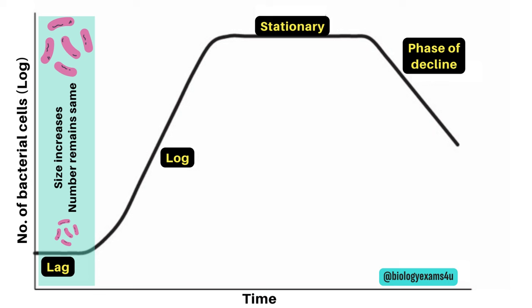The duration of lag phase varies with the species of bacteria, size of inoculum, nature of culture medium, and environmental factors such as temperature. The maximum size of the bacterial cells is obtained at the end of the lag phase.